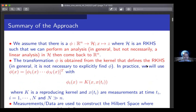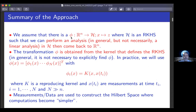The summary of the approach is as follows: we have an embedding phi from R^n into H, where H is some RKHS. We'll be mapping the ambient variable X into some variable Z in H. This transformation is obtained from the kernel that defines the RKHS. The kernel is a function of two variables — the second variable is used to build a basis for this RKHS. The data are used to construct this hidden space where computations become simpler.